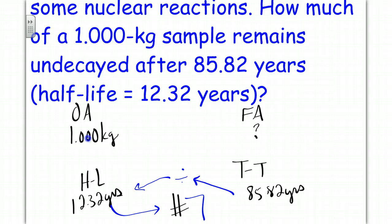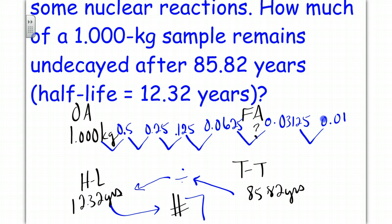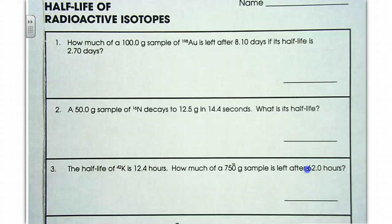We have the half-life and the total time. If we take the total time divided by the half-life, that's going to equal the number of half-lives. This means that I will take this sample and cut it in half seven times. So we'll get 0.5, then 0.25, then 0.125, 0.0625, 0.03125, 0.0156, where we get 0.00781, and that's kilograms. So note here we have 1, 2, 3, 4, 5, 6, 7 half-lives in our calculation.